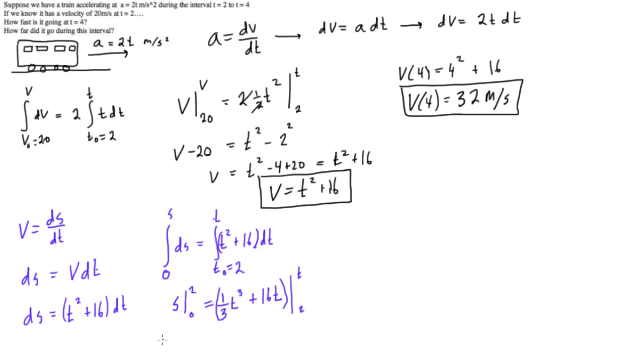So substituting these in, we get s minus 0 is equal to one-third t cubed plus 16t. And then we plug in the 2 minus one-third 2 cubed plus 16 times 2.